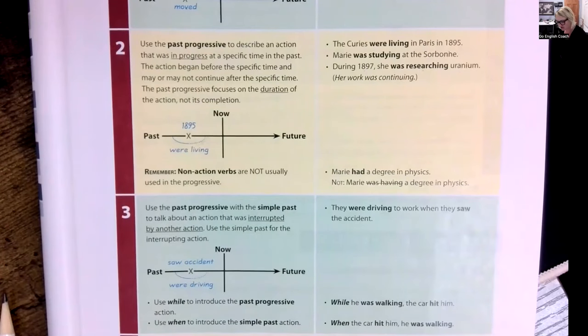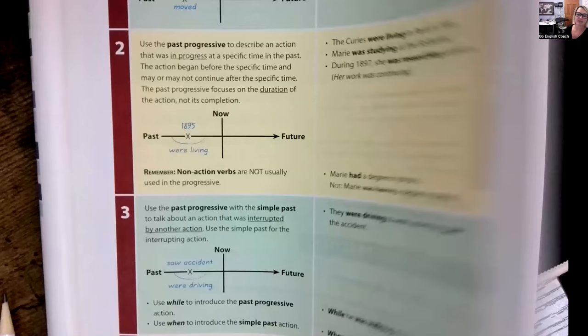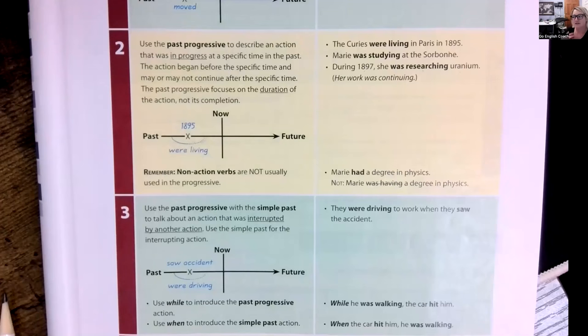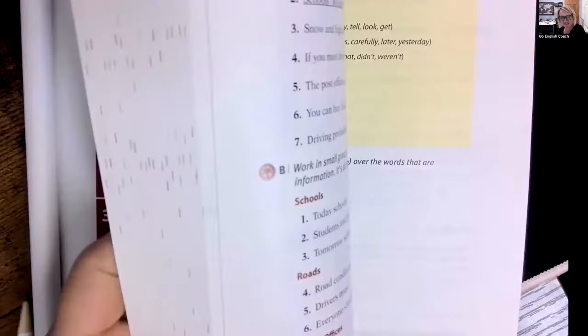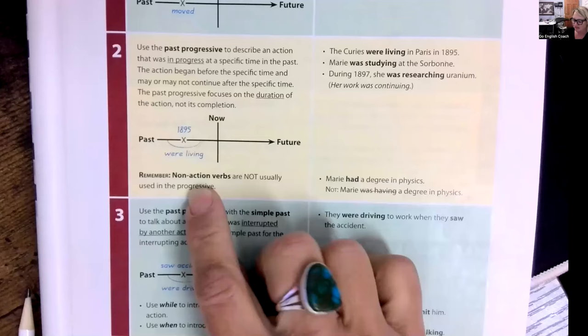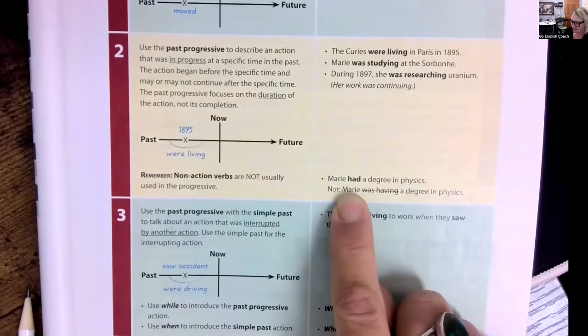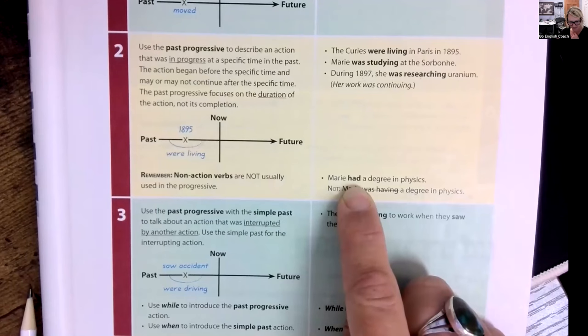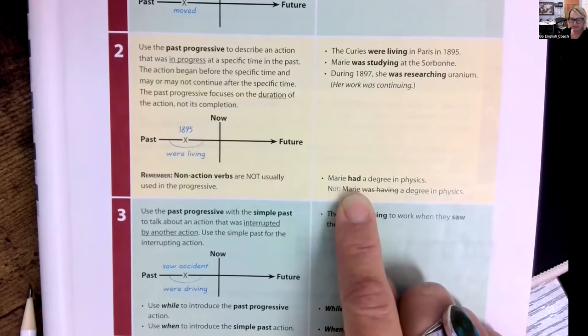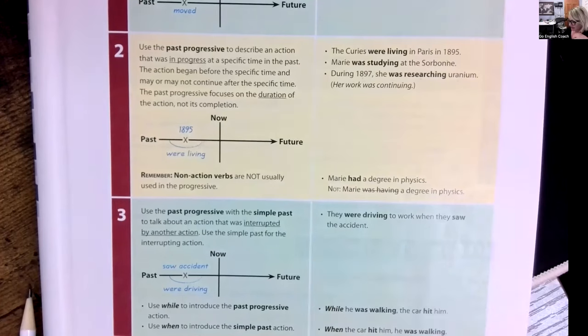Number two, we use the past tense to describe an action that was in progress. So it started at a specific time in the past and the action began before a specific time and may or may not continue after the specific time. So meaning here's a thing, so this is, it kind of happened for a period of time, a duration, the past progressive focuses on a duration of an action, not it being done. It might be done. But it's not the point of what you're talking about. You're not talking about it being done. So the Curies were living in Paris in 1985. That's a good example. Marie was studying at the Sorbonne and then during, here's a nice example of when we use during, during 1897, she was researching uranium. So for a year, at least in this example, she began and continued researching uranium. So it happened for a duration of time. And then we talked about this in our last unit about non-action verbs when we were talking in the present progressive. So the non-action verbs, if you remember, are the words that are like think, want, hope, kind of feelings, emotions, or states of being.